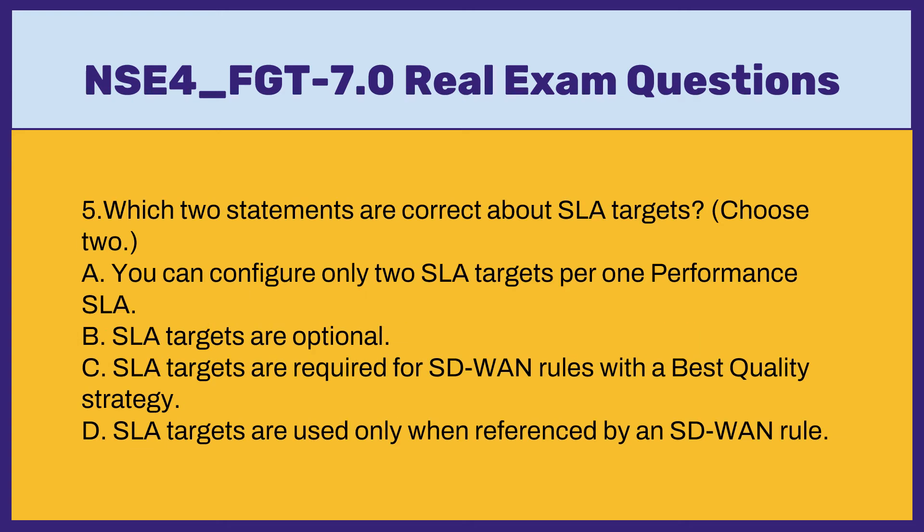Question 5: Which two statements are correct about SLA targets? Choose two. A. You can configure only two SLA targets per one performance SLA. B. SLA targets are optional. C. SLA targets are required for SD-WAN rules with a best quality strategy. D. SLA targets are used only when referenced by an SD-WAN rule.